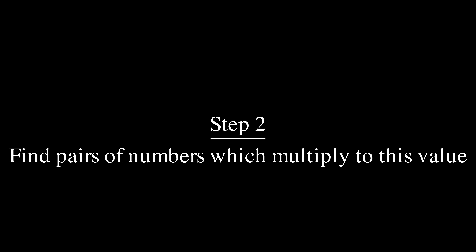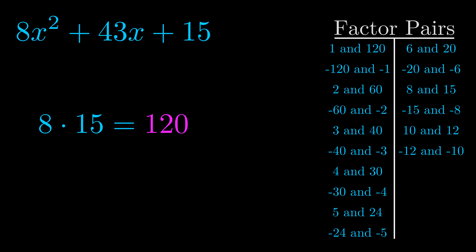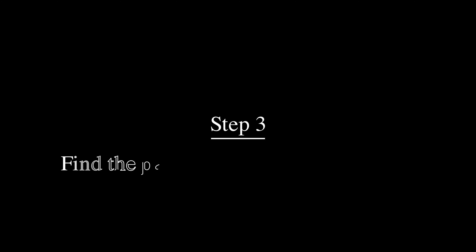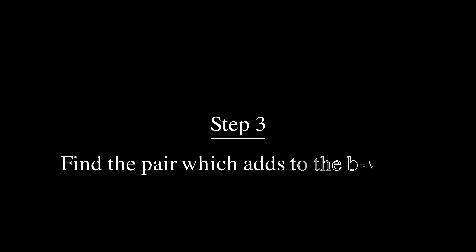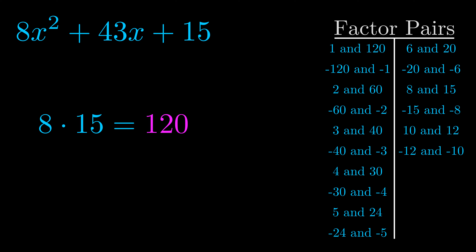Okay, here's what I came up with. Now once you have these factor pairs, the goal is to find which of these pairs adds to the b value. The b value is the coefficient on the x term — that's the middle term, the one that we haven't done anything with yet.